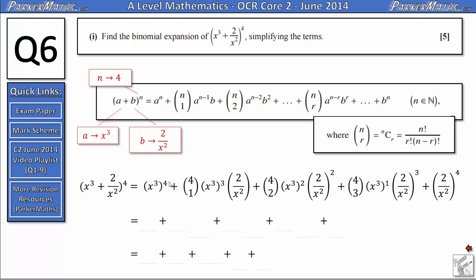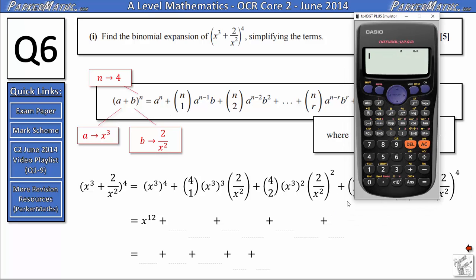The first term we've got x cubed to the power of 4. The rule for dealing with indices when you've got brackets is that you multiply the powers. So that becomes x to the power of 12. To work out the values for 4 choose 1, 4 choose 2 and so on, you may know them from Pascal's triangle for small powers of n. But I'm going to show you how to do it on the calculator anyway.